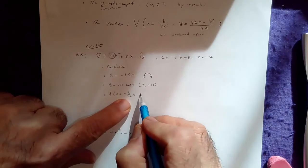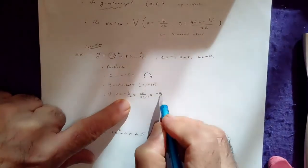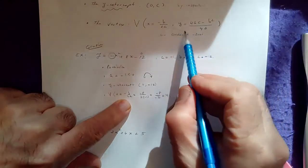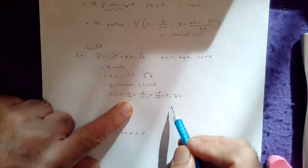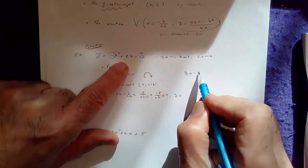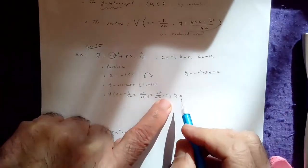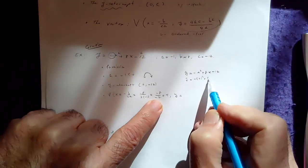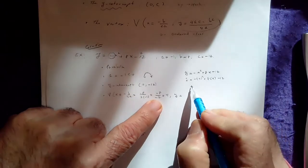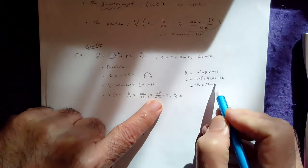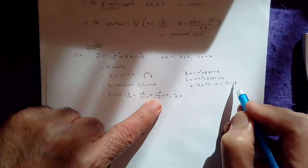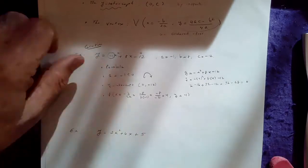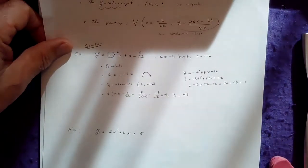So the vertex x-component is negative 8 over (2 times negative 1), which is negative 8 over negative 2, which equals 4. To find the y-component, go back to the original function and replace x with 4: negative 4 squared plus 8 times 4 minus 12 gives negative 16 plus 32 minus 12, which equals 4. So the vertex is at (4, 4).